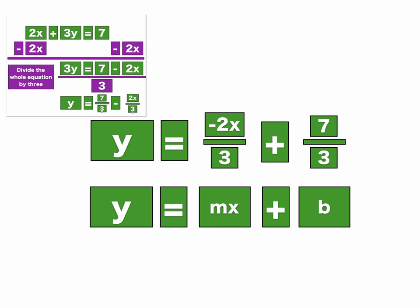Whatever is in front of the x is the slope. It could be 5, 10, 20, 50, 60, 100, whatever, times whatever. Whatever that is in front of the x, that is the slope. And so it's the m plus the b. In this case, 7 thirds is the b.